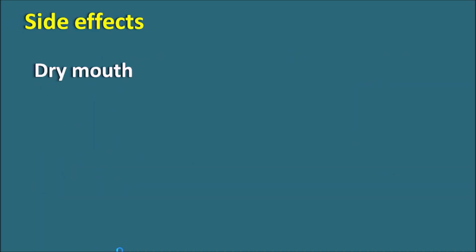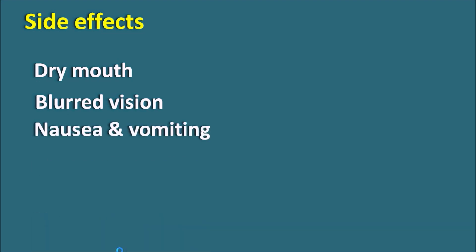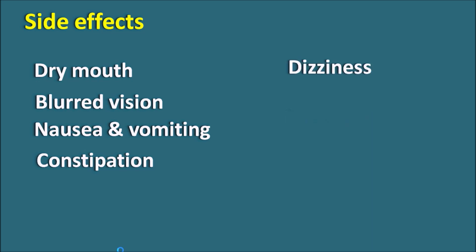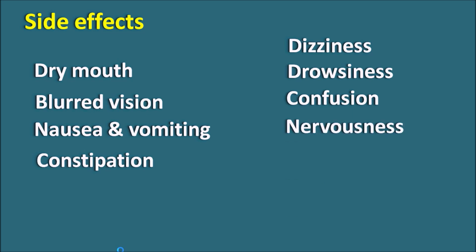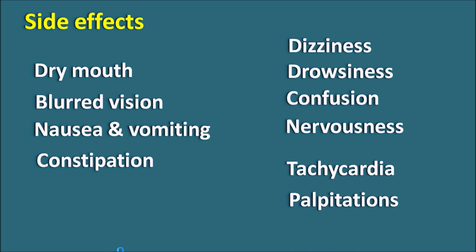What are the side effects? The first and most important side effect is dry mouth — since it is an anticholinergic it decreases salivary secretion. Another important side effect is blurred vision, due to reduction of lacrimal secretions. It can also produce nausea, vomiting, and constipation, since this drug acts as an antispasmodic. Central side effects include dizziness, drowsiness, confusion, and nervousness. Cardiovascular side effects such as tachycardia, palpitations, and awareness of heartbeat can also be observed in patients treated with Dicyclamine.